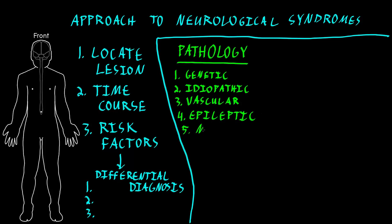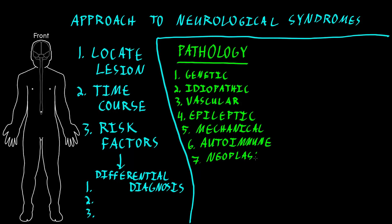The next category is mechanical, involving physical forces causing dysfunction or injury to parts of the nervous system. Next is autoimmune, which involves the body's immune system causing inappropriate changes to neural tissues. Then neoplastic, involving tumors that affect the nervous system. Next is metabolic — substances normally present in the body occurring in abnormal concentrations and causing problems with the nervous system. Then infectious, involving germs or pathogens that cause abnormalities in the nervous system.